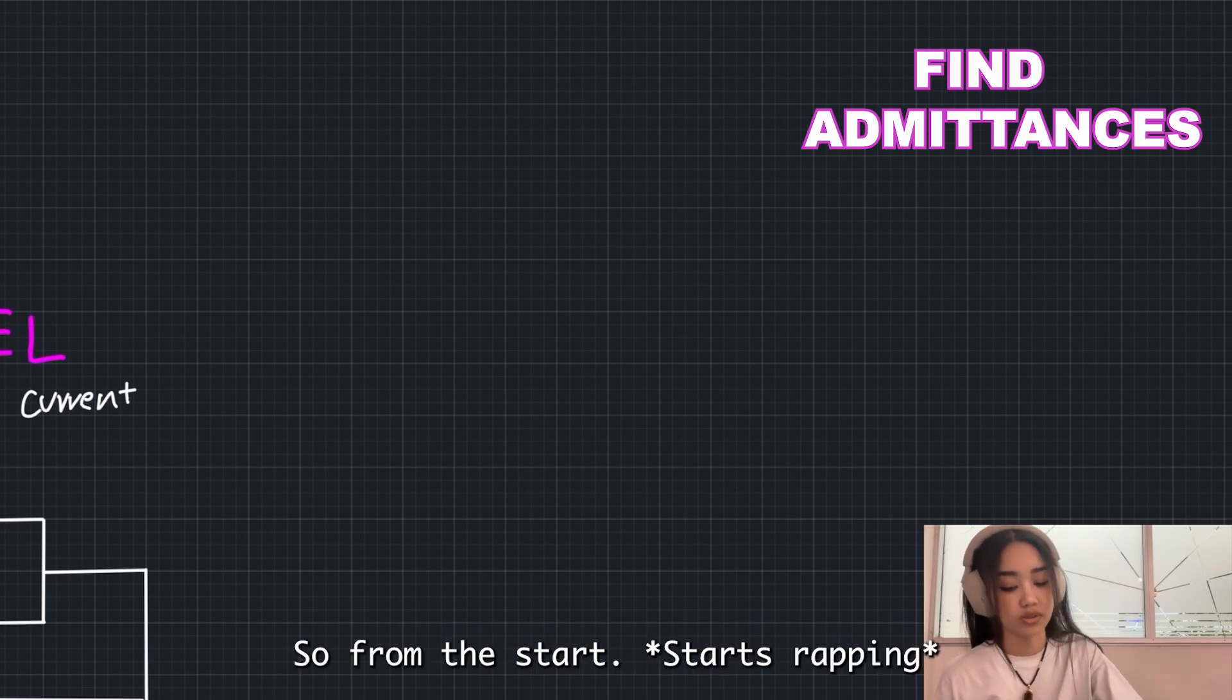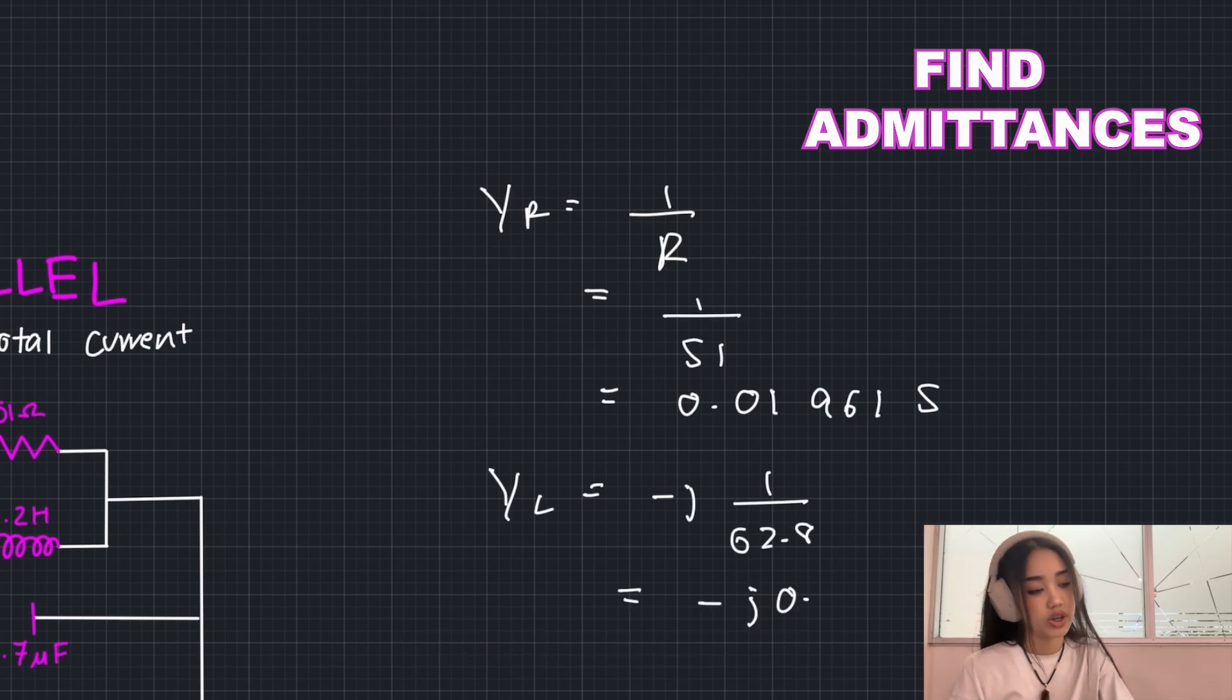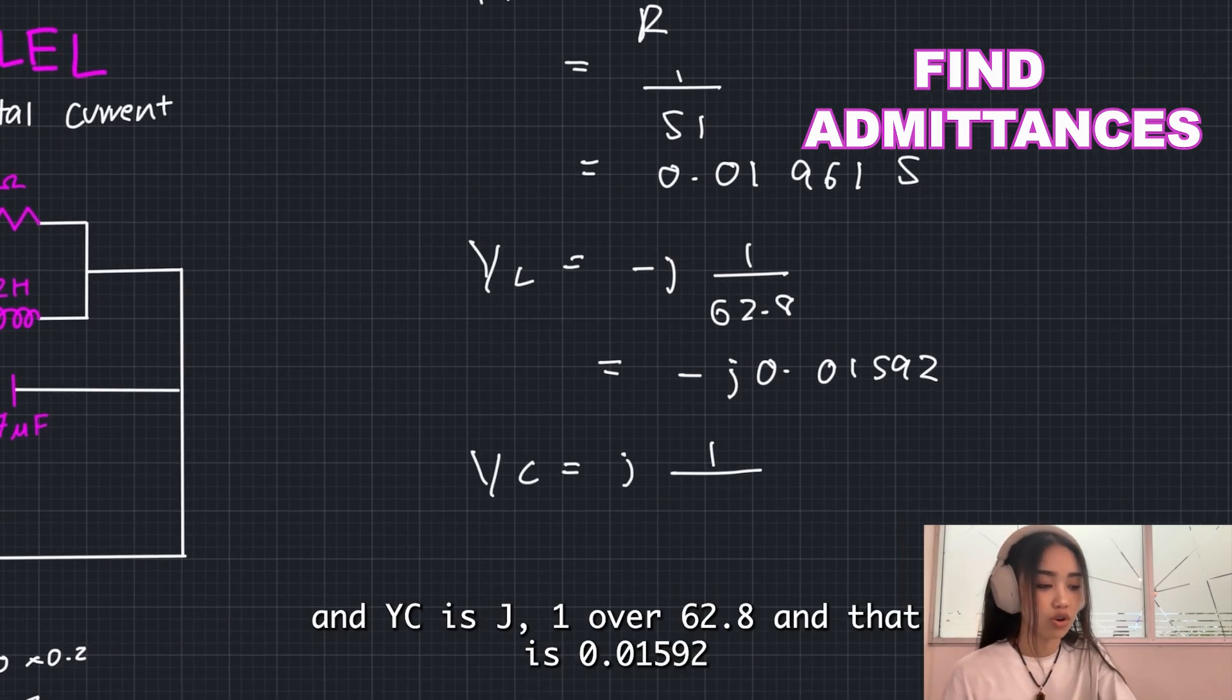Now we need to find the admittance of everything. So, YR is the reciprocal of 51, which is 0.01961. And now for YL, which is negative J over 62.8, is negative J 0.0592, and YC is J 1 over 62.8.